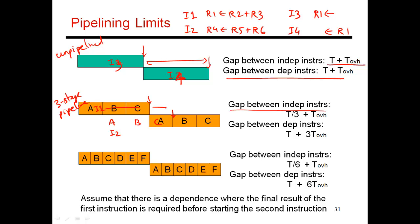I1 finishes at this point. The gap between the completion times is T by 3, because I've taken this and broken it up into three stages, plus the T overhead of each stage. There's a latch sitting over here. So now the gap between these independent instructions, I1 and I2, is T by 3 plus T overhead.